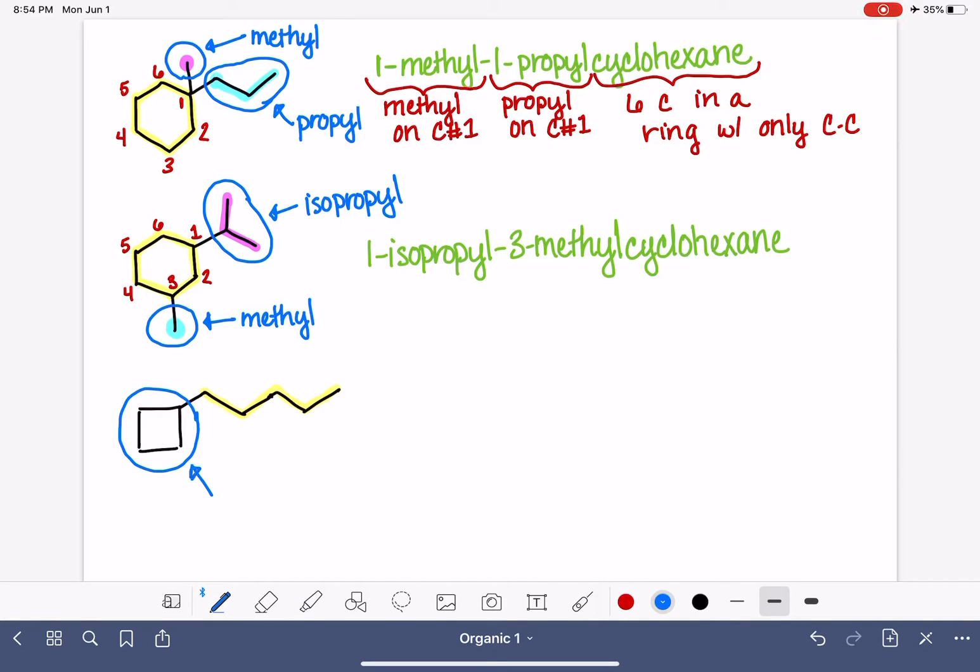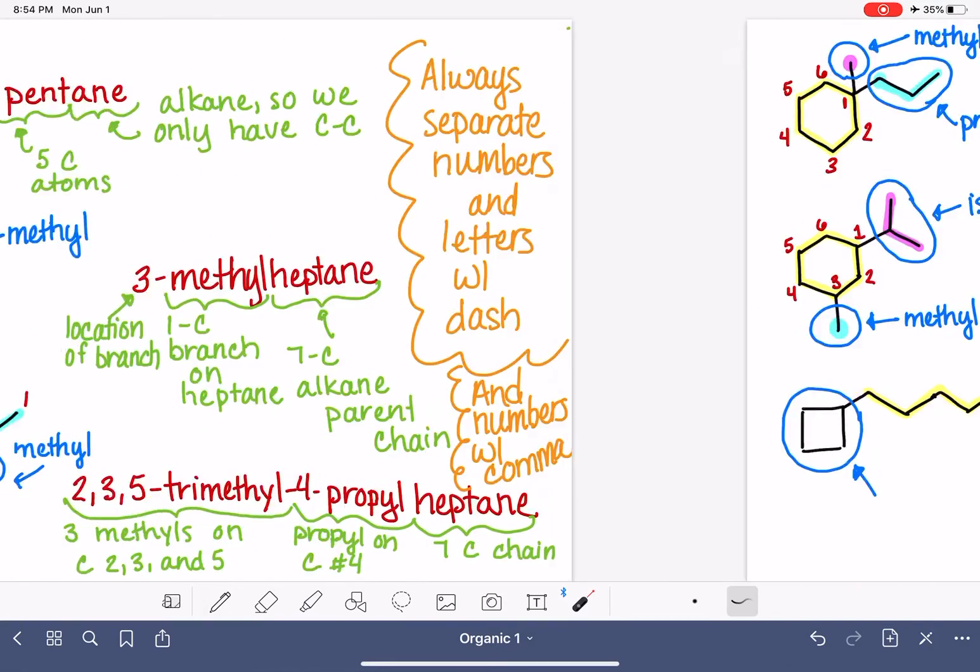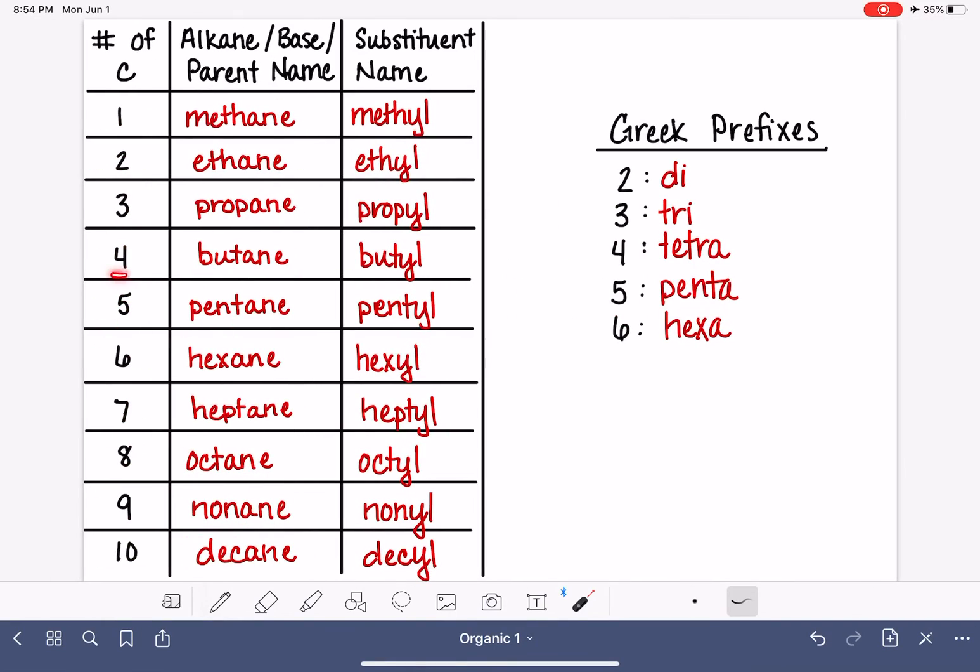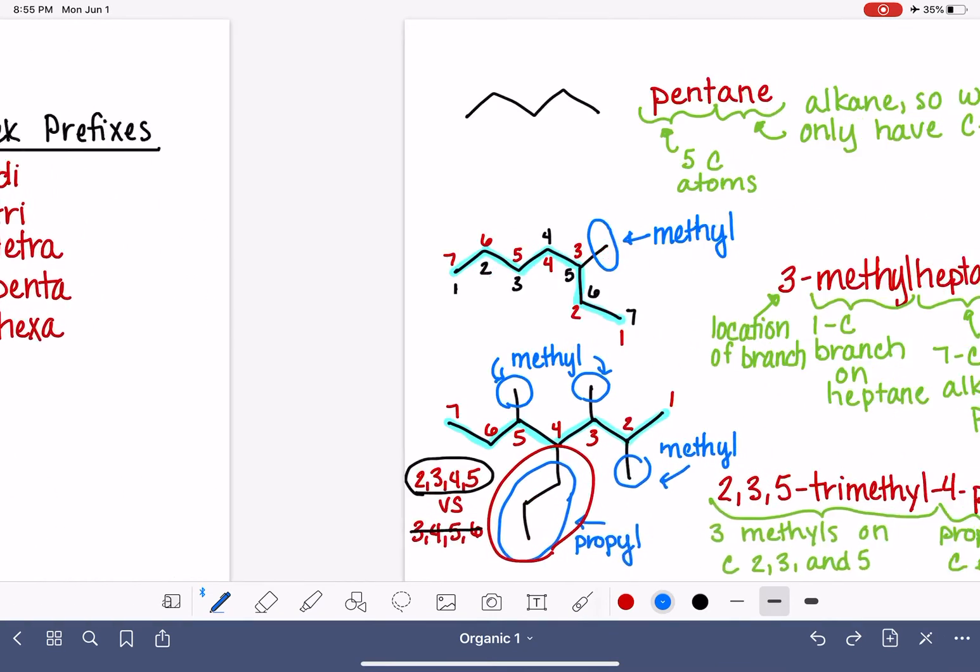So what is that guy's name? Well, that is a four-carbon substituent. And if we look at this list, four-carbons as a substituent is butyl. But the four-carbon substituent butyl would just be a straight continuous chain of four-carbon atoms, which is not what we have. We have a ring.